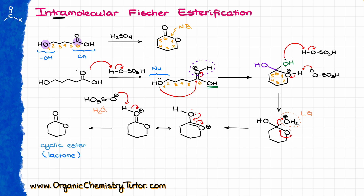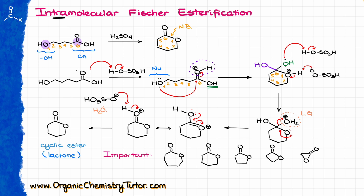Another term for cyclic esters is lactone. So if you hear the term lactone, it is nothing else but a cyclic ester. When it comes to ring size, it does matter: you can easily make seven-, six-, or five-membered rings — all perfectly fine. However, when it comes to a four-membered or three-membered ring, there is absolutely no way to make those via intramolecular Fischer esterification. Never go for three- or four-membered rings; five-, six-, and seven-membered rings are perfectly fine.